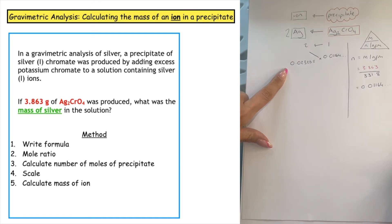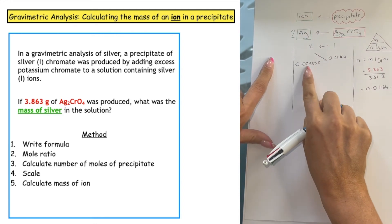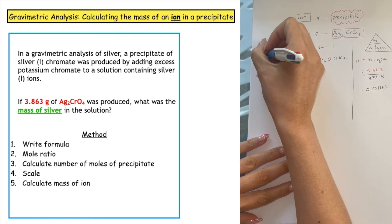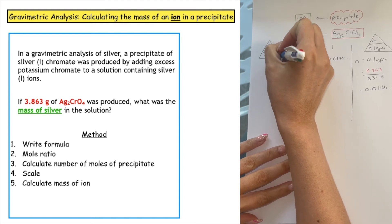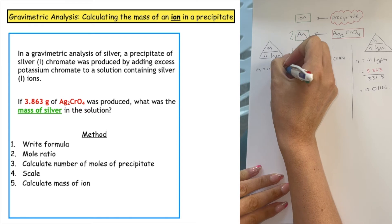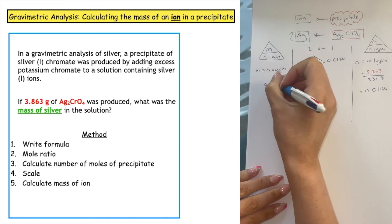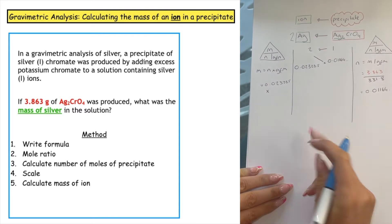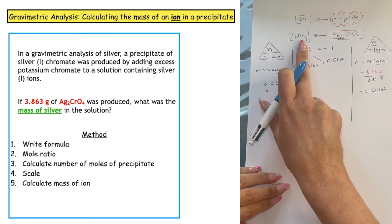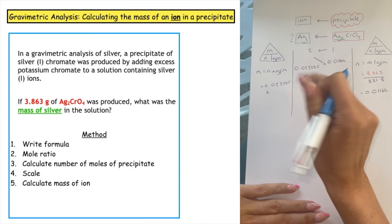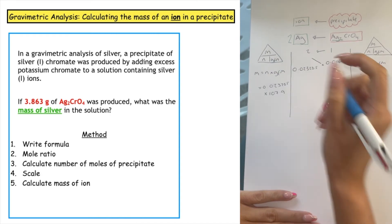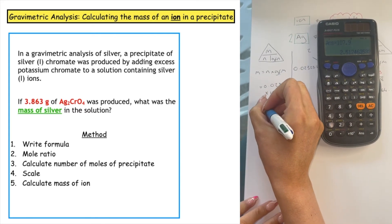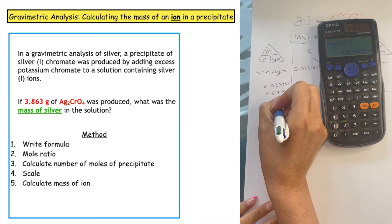The question doesn't ask for the number of moles — it wants the mass of silver. Using the mass triangle, M = N × GFM. The number of moles we carry through is 0.023285, and we've already scaled for two, so we just multiply by 107.9 — the GFM of one silver. That gives a mass of 2.512 grams.